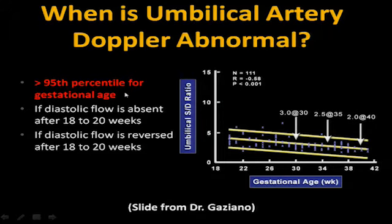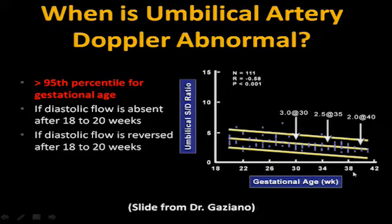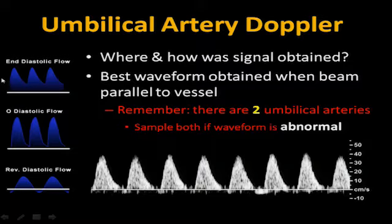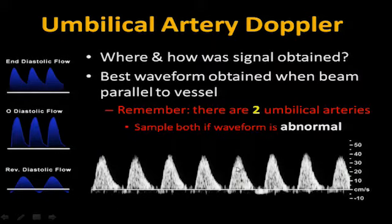When is the umbilical artery Doppler abnormal? When it's above the 95th percentile, when diastolic flow is absent after 18 to 20 weeks, or when diastolic flow is reversed after 18 to 20 weeks. Any of those scenarios is abnormal. When you have reverse end diastolic flow, it increases perinatal mortality by about 80%. Umbilical Doppler significantly reduces third trimester losses — it's letting us know when this baby is getting into trouble before you see changes in the NST.